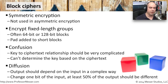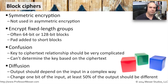Another concept is called diffusion. That means that your output should be very different than your input. If you were to change just one letter of your input, your output should be dramatically different. You shouldn't have minor changes to the output when you make minor changes to the input. Diffusion means that at least 50% of the output changes if you change one thing in your input, so you can always be assured that the ciphertext is as complex and difficult to figure out as possible.